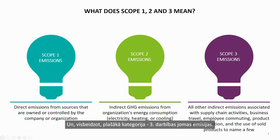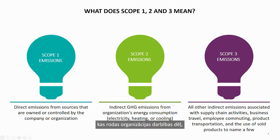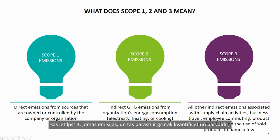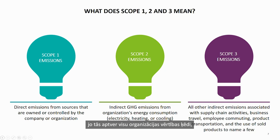Finally, the broadest category: Scope 3 emissions. Scope 3 emissions encompass other indirect emissions that occur because of an organization's activities but are not included under Scope 1 or Scope 2. The GHG Protocol sets 15 categories that fall under Scope 3 emissions, and they are typically more challenging to quantify and manage because they extend throughout the organization's value chain, including suppliers, customers, and other stakeholders.